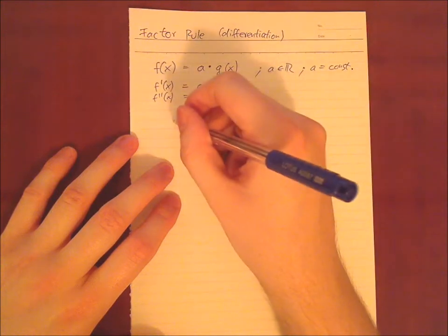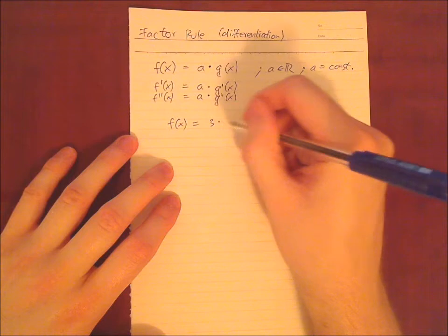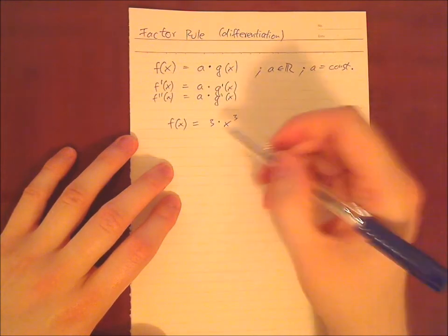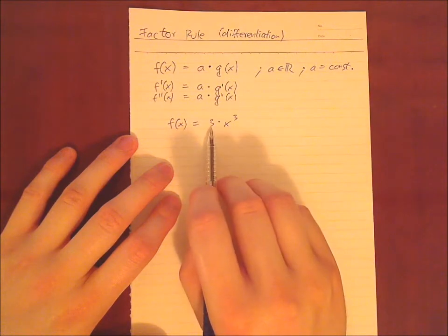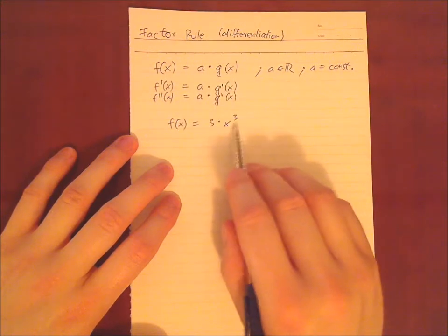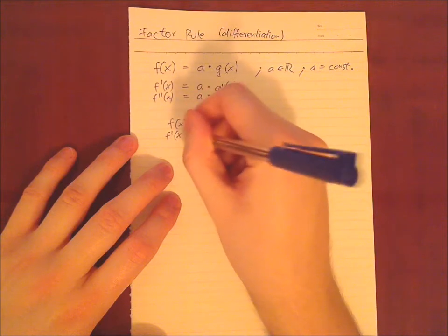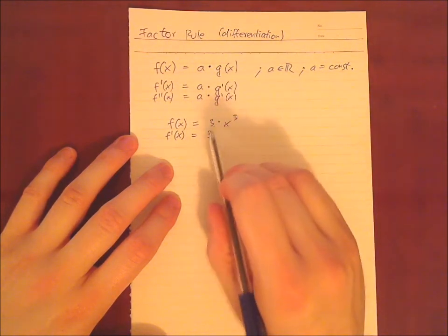Let's just calculate an example. We have 3x to the power of 3. And now we want to differentiate. There we see already, okay, this is a constant coefficient, the 3 here. Right? So, the 3 stays the same. But in this case, we also have a combination of the power rule.